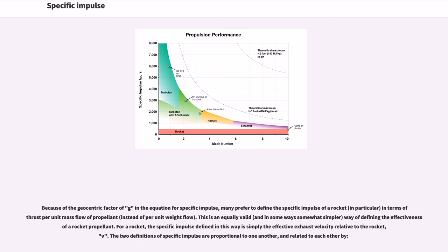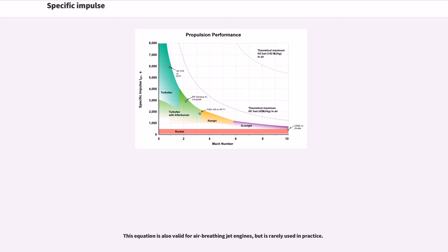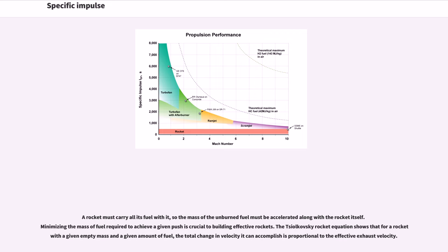The two definitions of specific impulse are proportional to one another. This equation is also valid for air-breathing jet engines but is rarely used in practice. It is related to thrust by the equation where the propellant mass flow rate is the rate of decrease of the vehicle's mass. A rocket must carry all its fuel with it, so the mass of unburned fuel must be accelerated along with the rocket itself. Minimizing the mass of fuel required to achieve a given push is crucial to building effective rockets. The Tsiolkovsky rocket equation shows that the total change in velocity is proportional to the effective exhaust velocity.